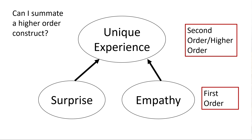From a summation standpoint, you're still trying to show the unique parts that make up the construct — and you'll never do that by summating everything together. So you're still treating it as a higher-order model, summating the first-order ones individually, but still modeling the higher-order structure even in a path model. You can't cram it all into one; it still has to be in a higher-order format.